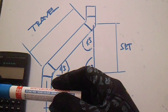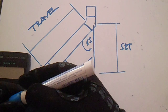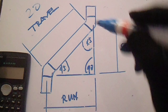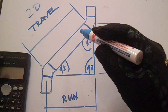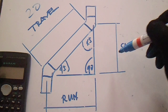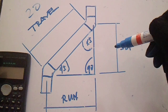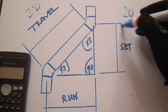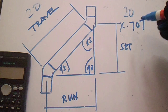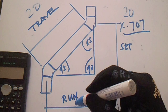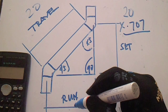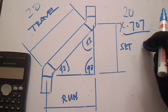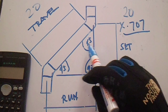Now if the given is travel — let's say this is 20 — you can directly multiply it by 0.707 to get this set and run. So 20 multiplied by 0.707 gives set or run. Please take note: 0.707 is for 45 degrees only.